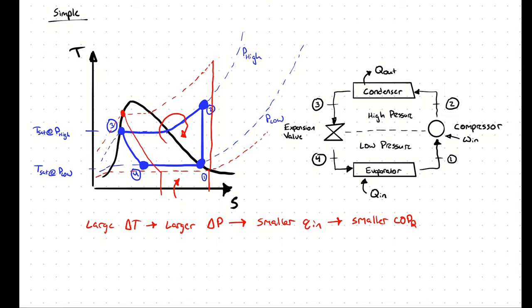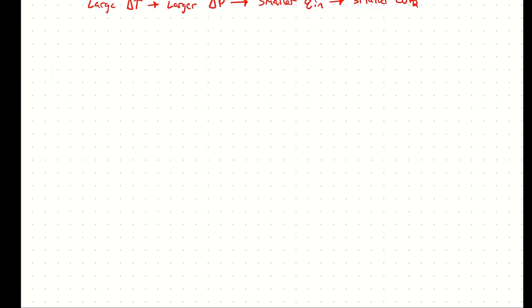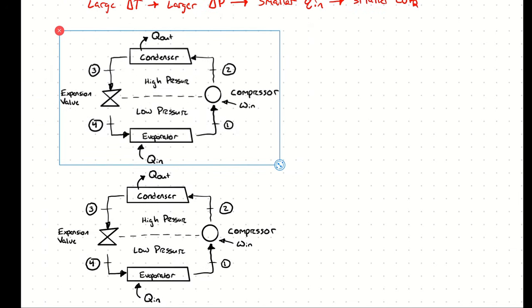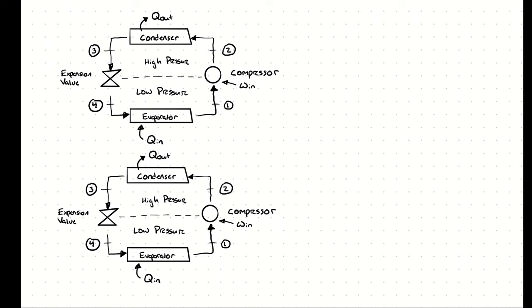One solution to that problem is to split the refrigeration cycle across multiple refrigeration stages — literally putting refrigeration cycles end to end, where the heat pushed out from one condenser is pulled in to the next evaporator. This is referred to as multi-stage refrigeration, sometimes called cascade refrigeration. In very low temperature refrigeration cycles, you might even need three or four stages. They may have different operating pressures and different working fluids, but the principle is the same across each of them.